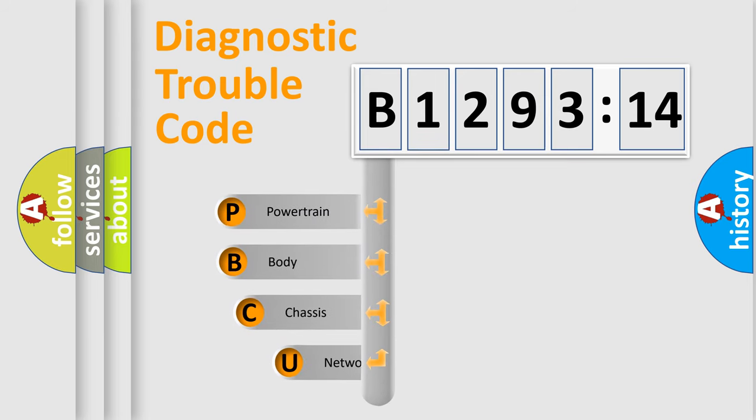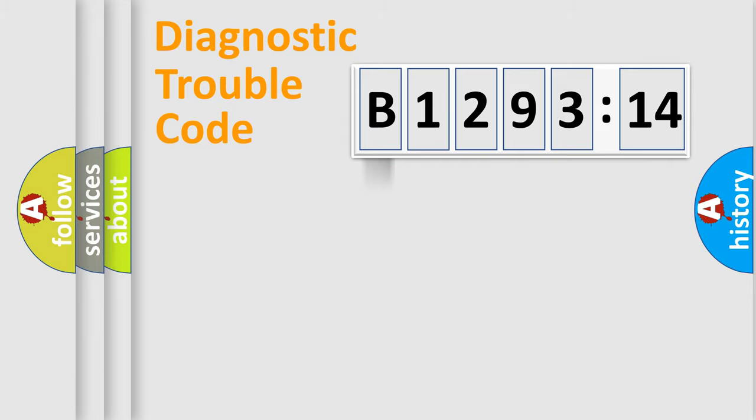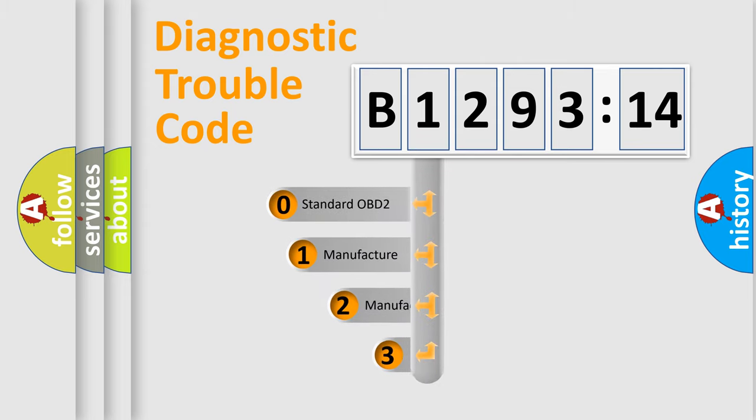First, let's look at the history of diagnostic fault code composition according to the OBD2 protocol, which is unified for all automakers since 2000. We divide the electric system of automobile into four basic units: Powertrain, Body, Chassis, and Network.